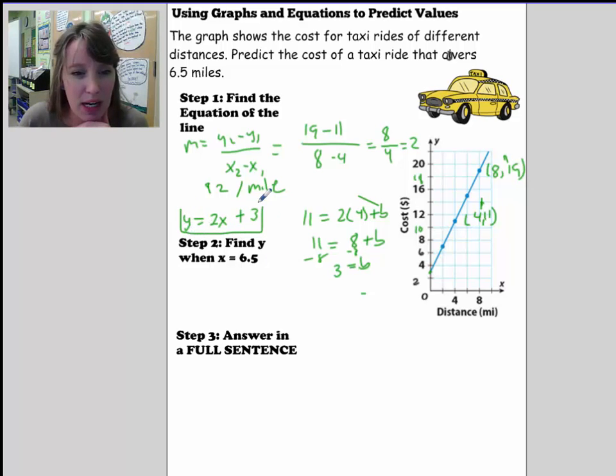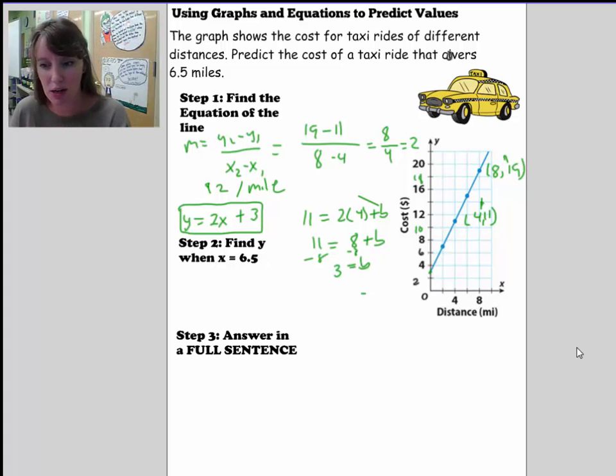That's like if you go into a taxi. Even in New York City, when you sit down into the taxi, there's already a charge on the ticker because they have an initial cost and then they have a per mile cost. Now we're going to use this to predict a value.